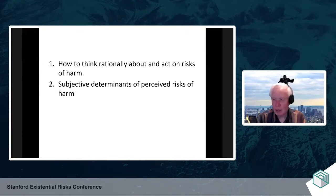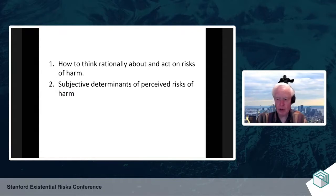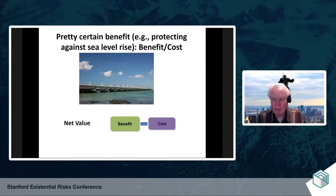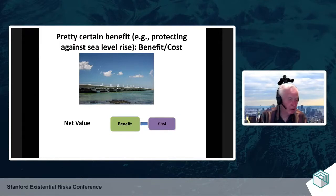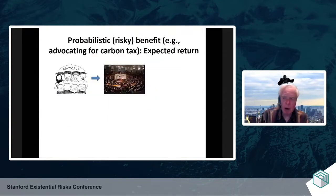Let me share my screen. As Suzanne mentioned, we're going to divide our 25 minutes into two parts. One is how to think rationally about and act on risks of harm. I'm going to use mainly existential risks as my examples. So when you're pretty certain what the benefit is — for example, protecting a city against sea level rise — the fundamental way of thinking about it is benefit minus cost. What's the benefit measured in lives and property, and what's the cost? If the benefit exceeds the cost, then it's a go.